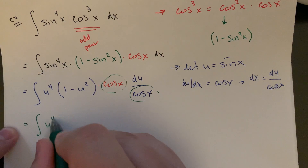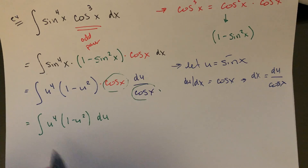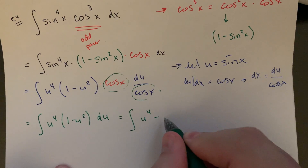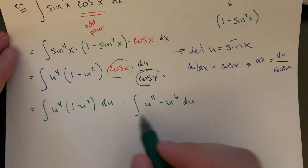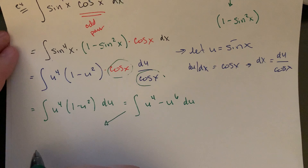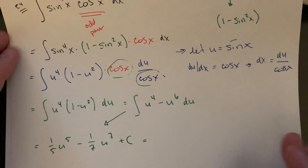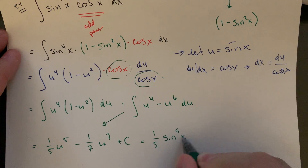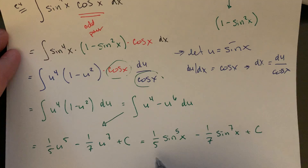After cancellation this becomes the integral of u to the fourth times one minus u squared du. Distributing gives u to the fourth minus u to the sixth du — a straightforward power rule. Integrating: one fifth u to the fifth minus one seventh u to the seventh plus C. Substituting back u = sine x gives one fifth sine to the fifth of x minus one seventh sine to the seventh of x plus C.